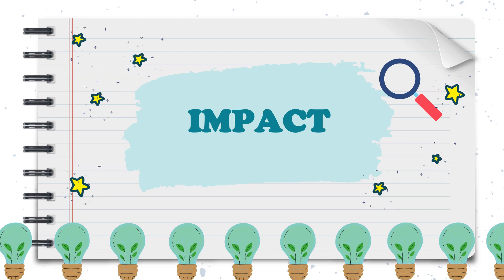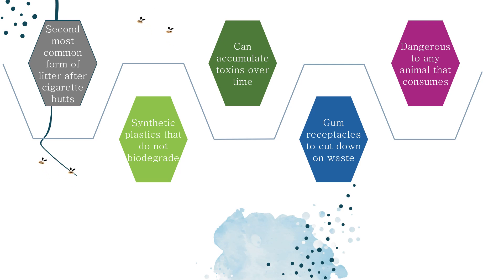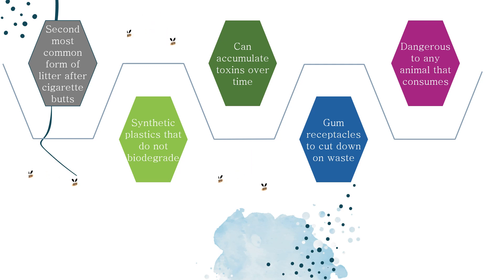Impact of chewing gum. What happens when you're done chewing it? 80–90% of chewing gum is not disposed of properly, making it the second most common form of litter after cigarette butts. Chewing gum is made from polymers, which are synthetic plastics that do not biodegrade. When tossed on the sidewalk, it remains there until removed, which can be a costly and time-consuming process. Littered gum can also make its way into the food chain and has been found in fish, where it can accumulate toxins over time.